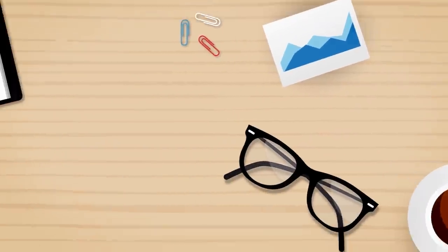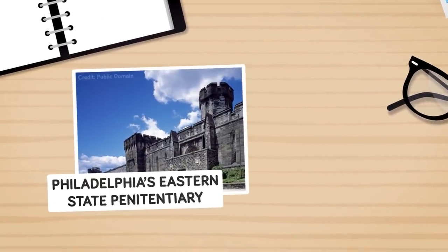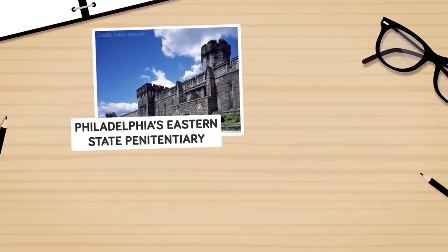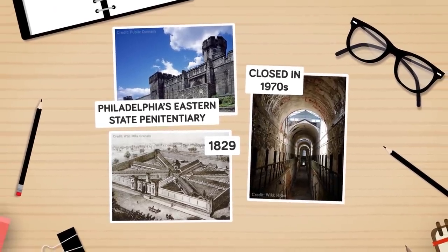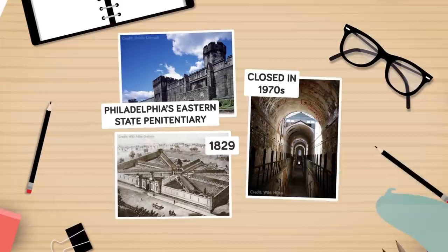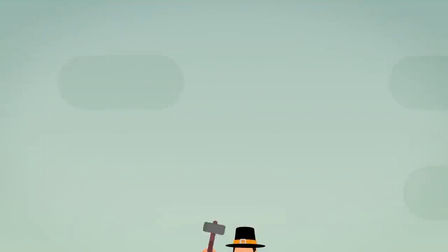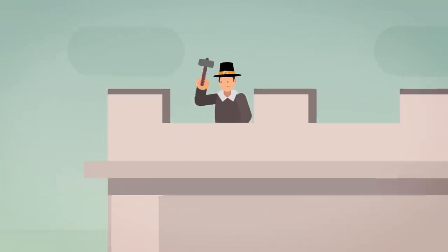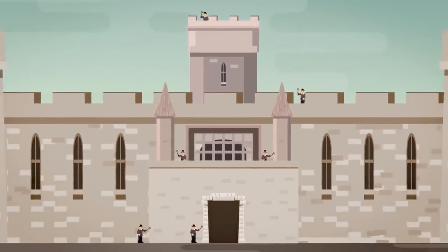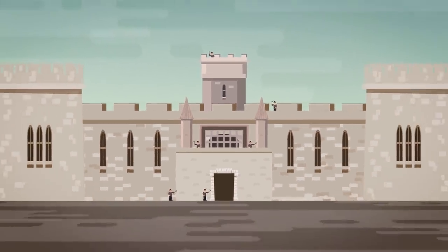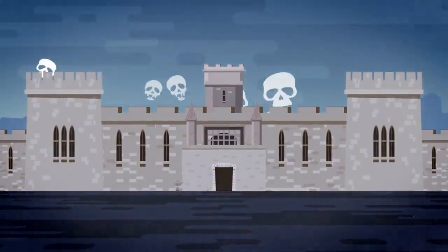Philadelphia's Eastern State Penitentiary is one of the oldest prisons in the US. Founded by Quakers in 1829, the prison remained open for nearly 150 years before it was closed in the 1970s. It should come as no surprise that the prison is also rumored to be one of the most haunted places in America.